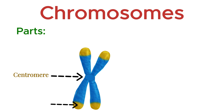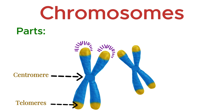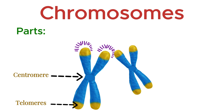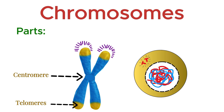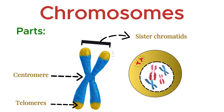At the ends of the chromosome are the telomeres — protective caps that prevent the chromosome ends from fraying or sticking to other chromosomes. Telomeres also play a role in cell aging and stability. During cell division, each chromosome is duplicated, resulting in two identical sister chromatids joined at the centromere.